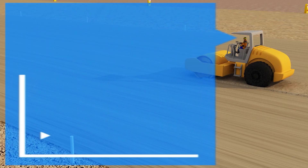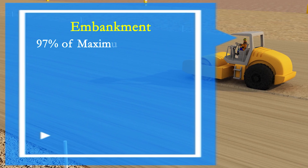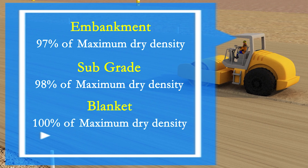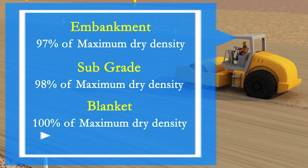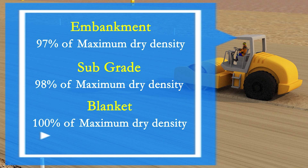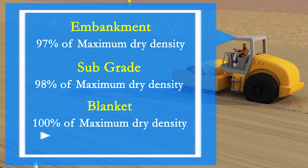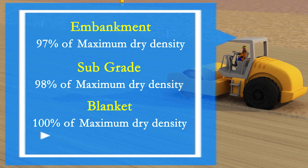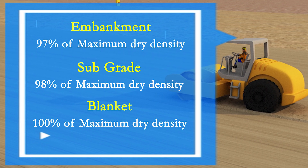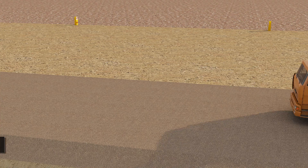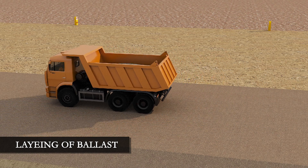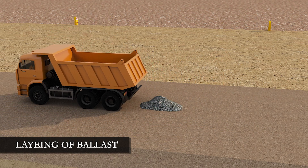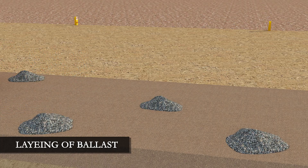Relative compaction must be achieved for each layer: embankment at 97% of maximum dry density, subgrade at 98% of maximum dry density, and blanket at 100% of maximum dry density. After completion of embankment, subgrade, and blanket, the formation is ready to receive the ballast layer.